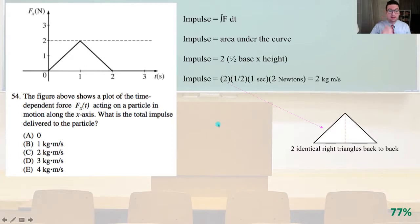Number 54. The figure above shows a plot of the time dependent force, Fₓ(t), acting on a particle in motion along the x axis. What is the total impulse delivered to the particle? The impulse equals the integral of the force times the infinitesimal change in time, dt. Impulse is also equal to the area under our curve in this problem.